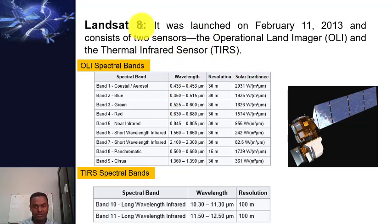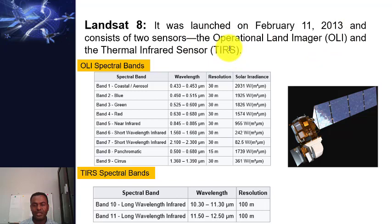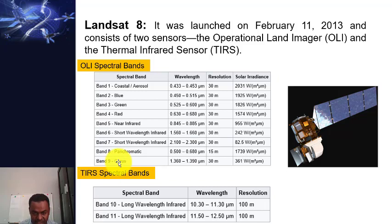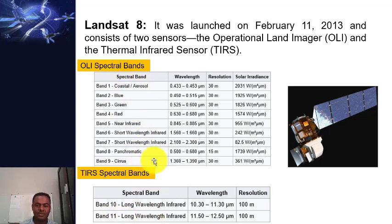The latest Landsat 8 program, launched February 11, 2013, consists of two sensors: the Operational Land Imager and the Thermal Infrared Sensor. The OLI includes nine spectral bands. Band 1 and band 9 are additional bands not present in previous Landsat programs, and band 11 is also additional — making three new bands compared to Landsat 7.